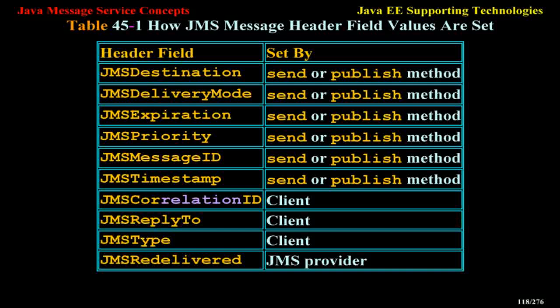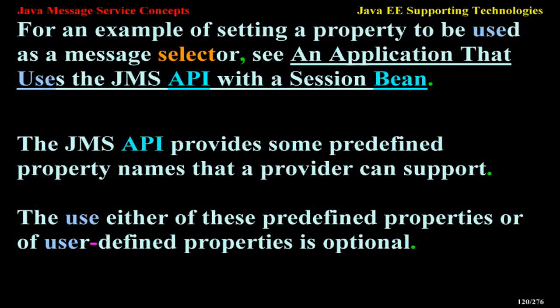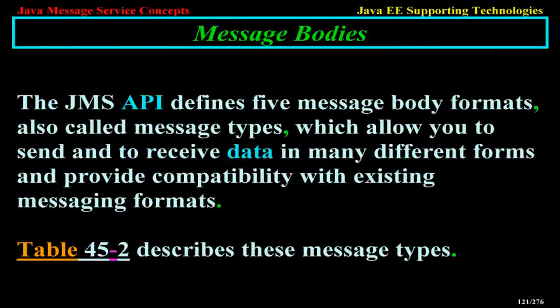Message Properties. You can create and set properties for messages if you need values in addition to those provided by the header fields. You can use properties to provide compatibility with other messaging systems, or you can use them to create message selectors. Message Bodies. The JMS API defines five message body formats, also called message types, which allow you to send and receive data in many different forms and provide compatibility with existing messaging formats.